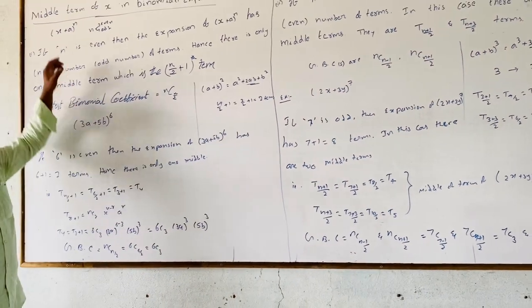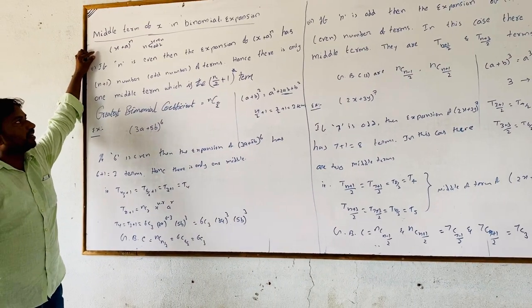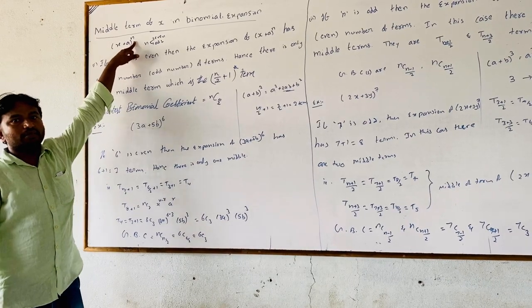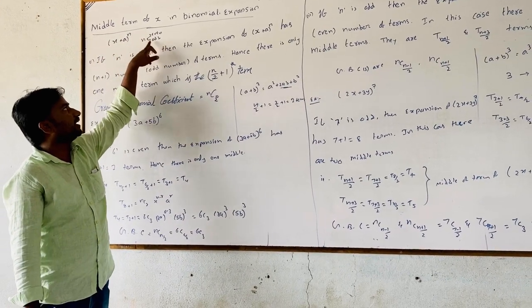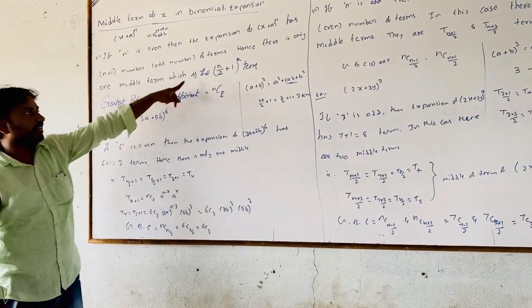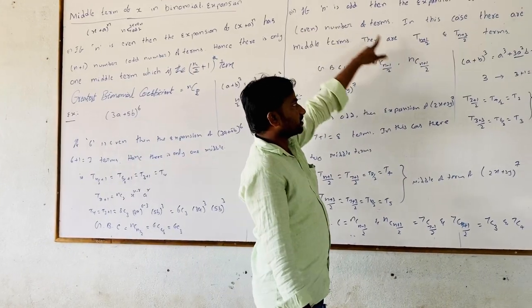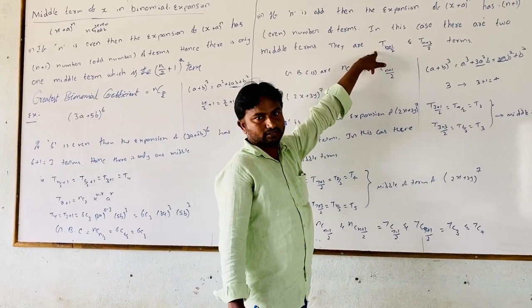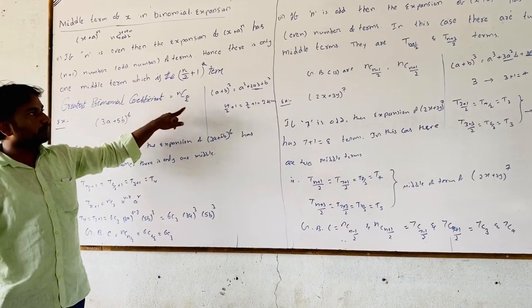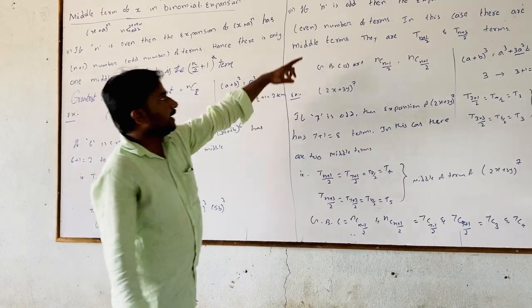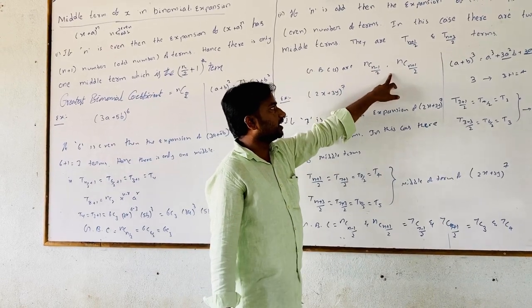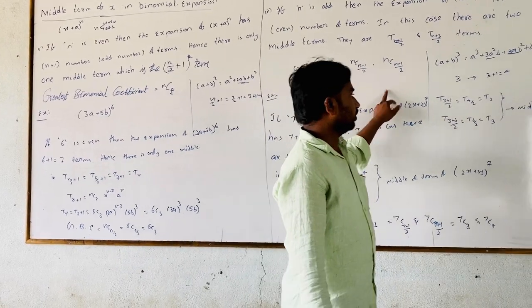To summarize: for the middle terms of the binomial expansion of (x + a)^n — when n is even, the expansion has only one middle term; when n is odd, the expansion has two middle terms. For the greatest binomial coefficient: when n is even, GBC = nC(n/2); when n is odd, GBC = nC(n−1)/2 or nC(n+1)/2.